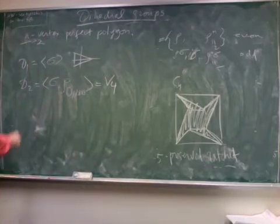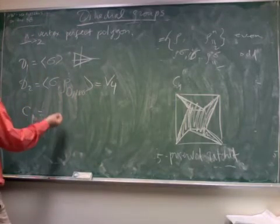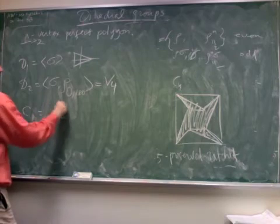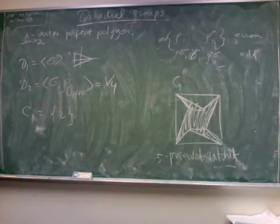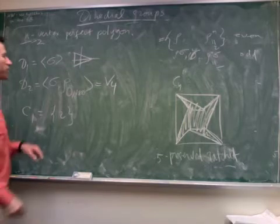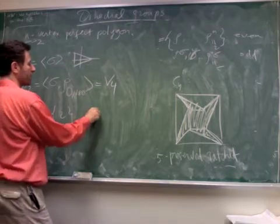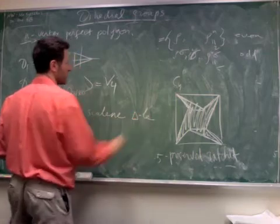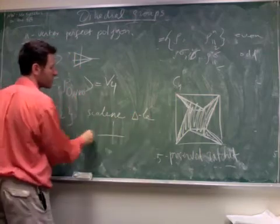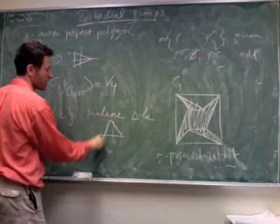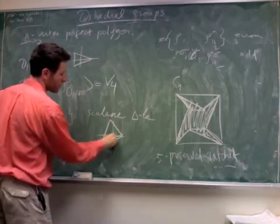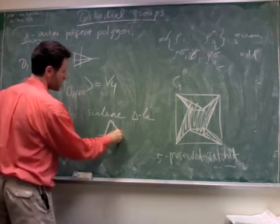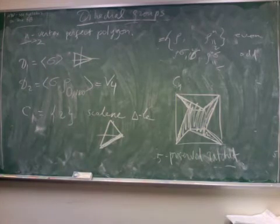Finally, C1 is just identity. That's the group of symmetries of a scalene triangle. Absolutely irregular triangle. So something like that, which is only preserved by identity.